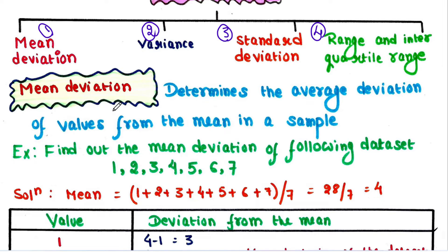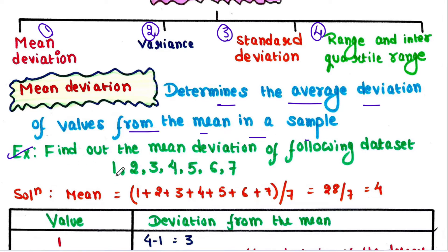First, let's talk about mean deviation. Mean deviation is the measure of dispersion which determines the average deviation of values from the mean in a sample. Let's look at an example: find out the mean deviation of the following data set.